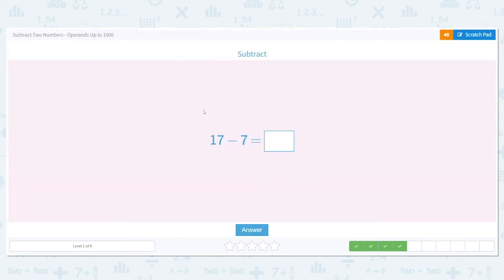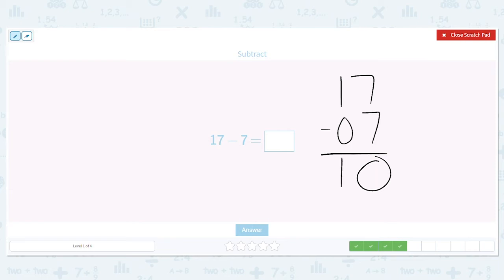Next, we have 17 minus 7. So if I have 17 and I have 7 to take away, let's ask, if I have 7 apples, can I give you 7 apples? Do I have enough? I do. So what is 7 minus 7? It's 0. And there's nothing in this spot. So it's kind of like there's a 0 here. We don't actually put it there. But I'm putting it there to hold a place. So what is 1 minus 0? It's 1. So 17 minus 7 equals 10.